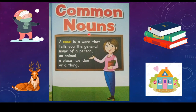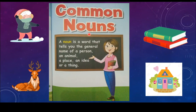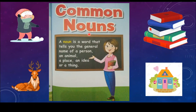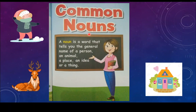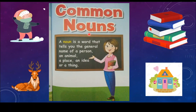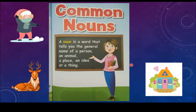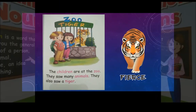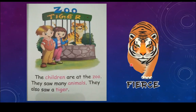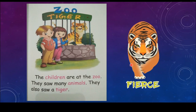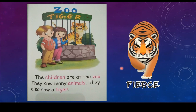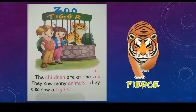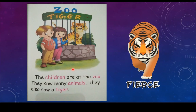Common nouns is the general words — kata umum untuk orang, haiwan, benda, dan juga tempat. Kata nama ini merujuk kepada orang, merujuk kepada haiwan, benda, dan juga tempat. These four things you need to memorize in nouns: people, animals, things, and also places. Come, let's have a look at the example. As for today, we are going to read a story so that we can detect the common nouns in the story.